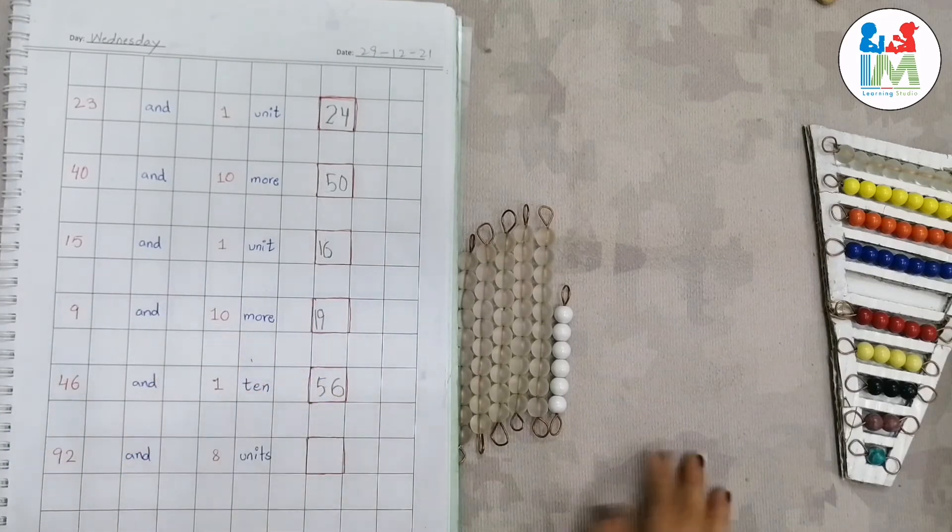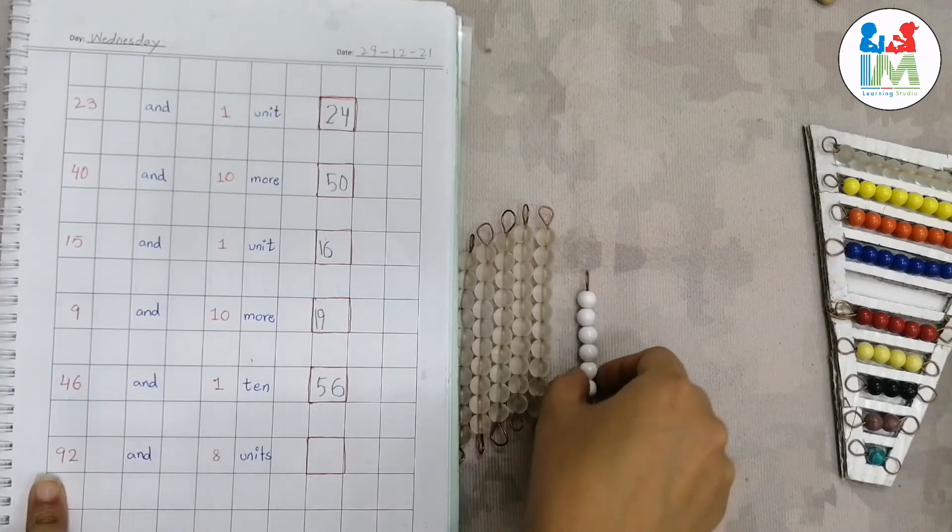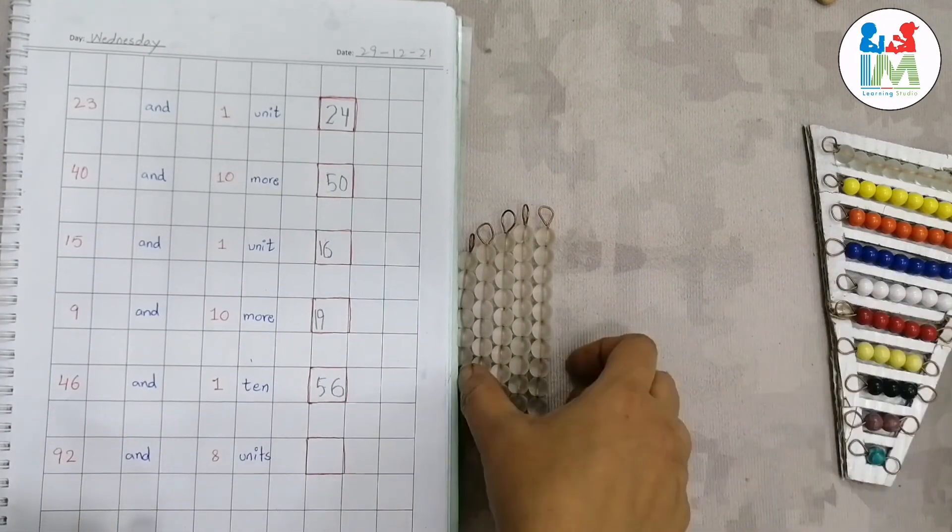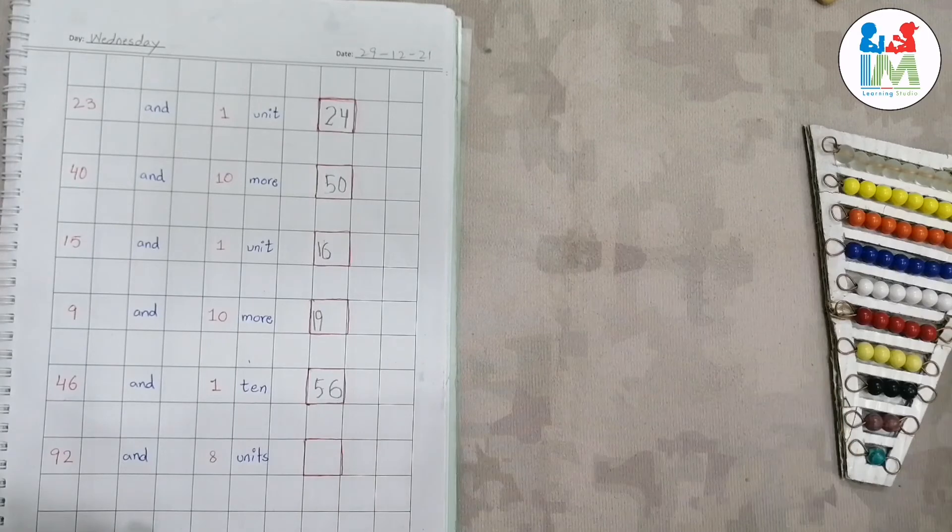Write 56. Good. Now next, what number here? 92. 92. How many tens in 90? Nine tens. Nine tens, can you place nine tens?